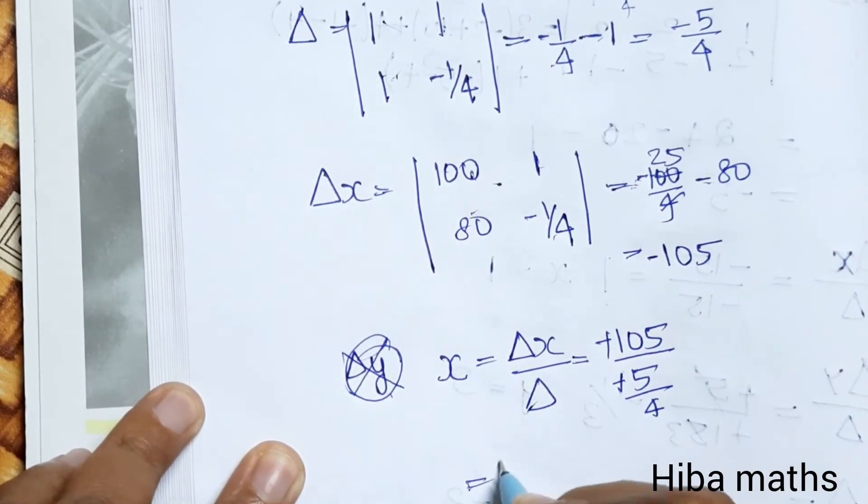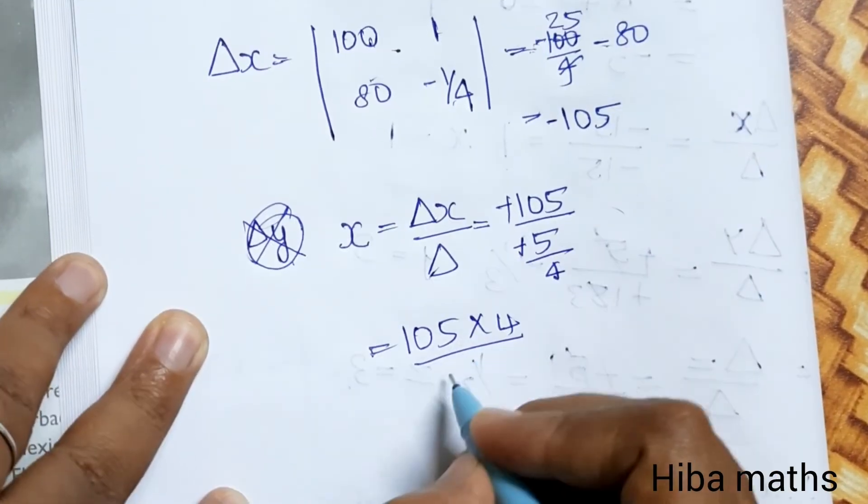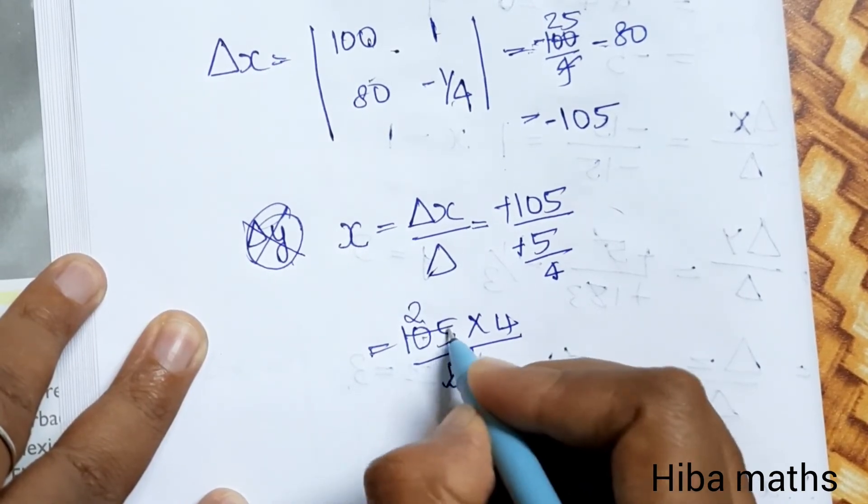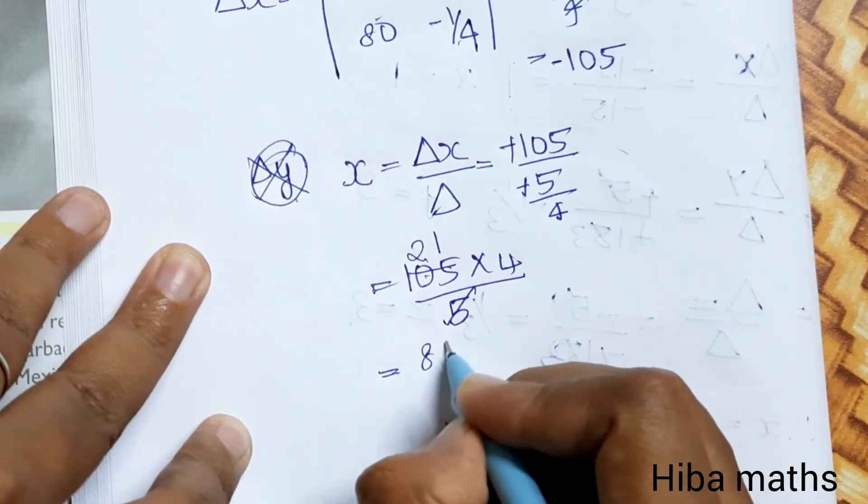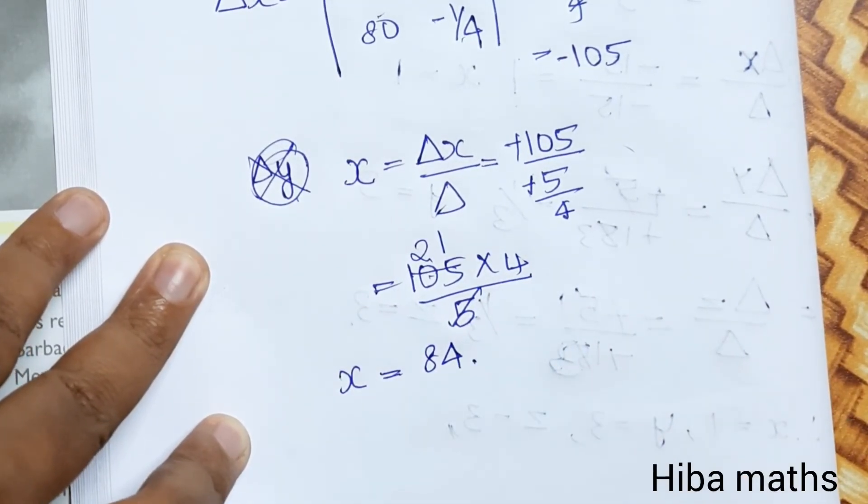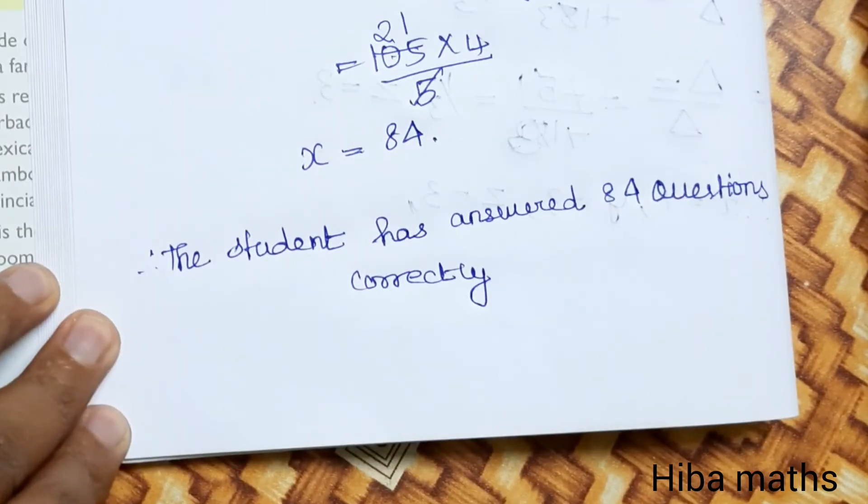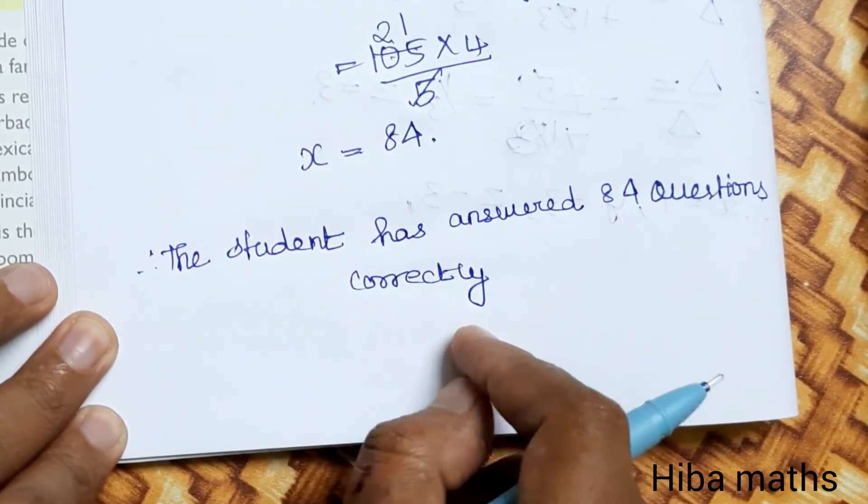Adding the terms: 105 into 4 divided by 5. 5 twos are 10, 5 ones are 5, so the answer is 84. The student has answered 84 questions correctly.